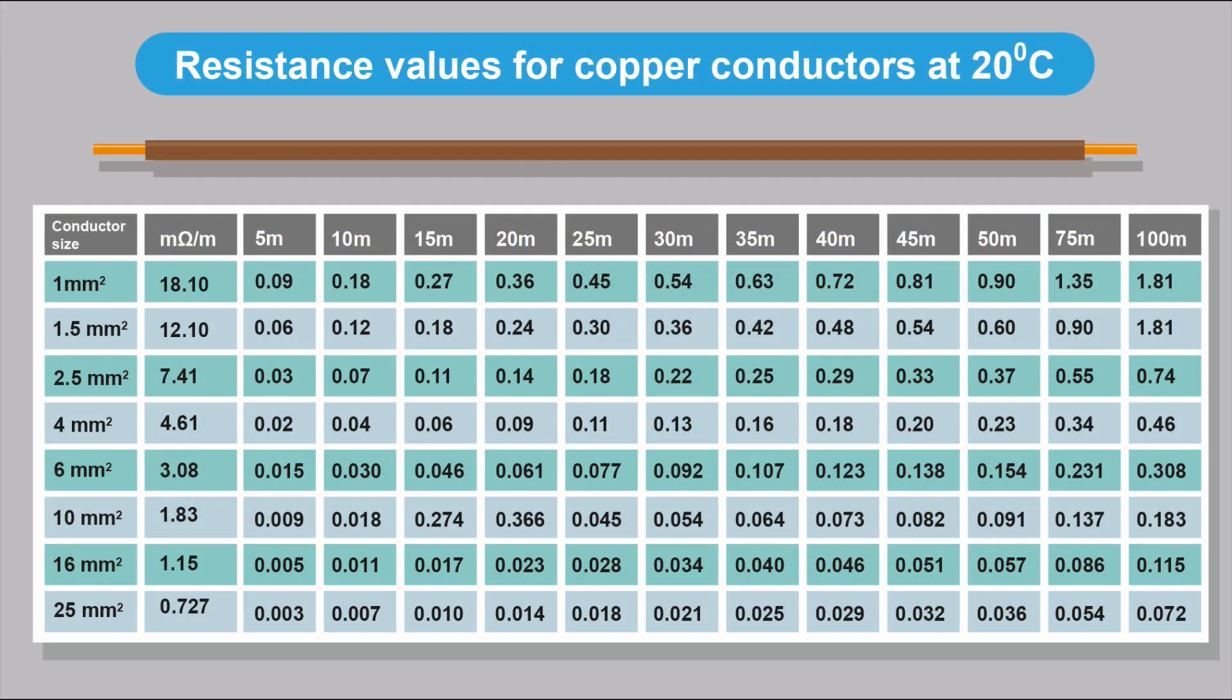So I put a table together here with the regular conductor sizes from one millimetre squared to 25 millimetre squared, and there's the milliohms per metre for each conductor. And then I've calculated the expected resistances from five metres up to 100 metres.